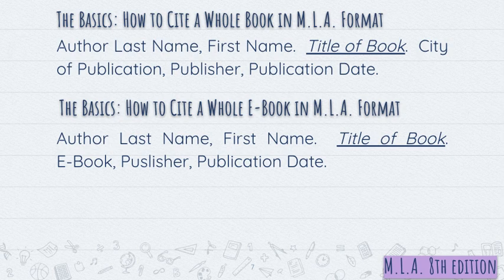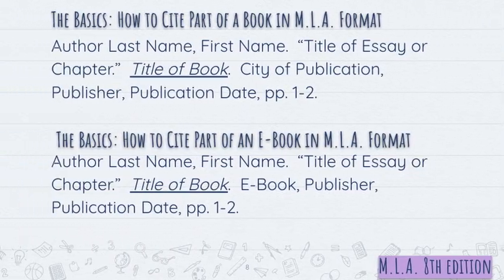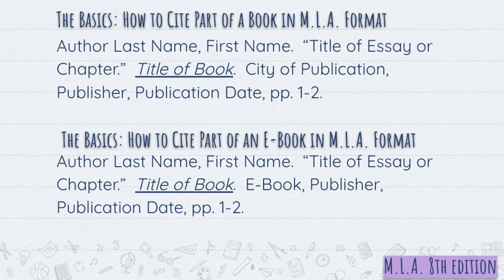If you're going to cite a whole e-book in MLA format, rather than write the city of publication, you simply write e-book. If you're missing any info, you can leave that part out of the citation. So if you can't find one particular component of this works cited entry, just leave it out.